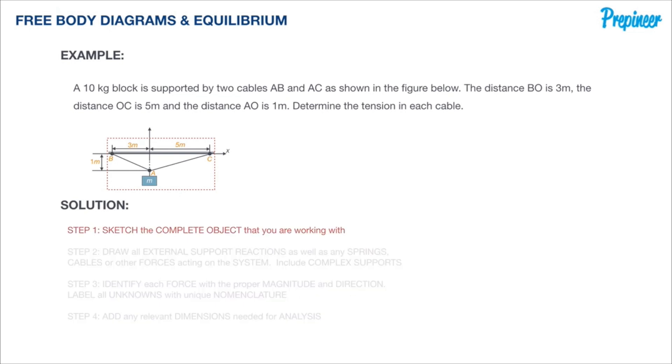Remember that our object of interest are the cables that are connected at point B and C and are supporting the mass hung at point A. So we can simply draw out the shape as it is depicted in the original formula. This is our starting point for our free body diagram.